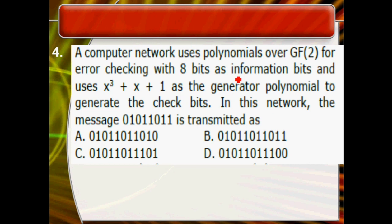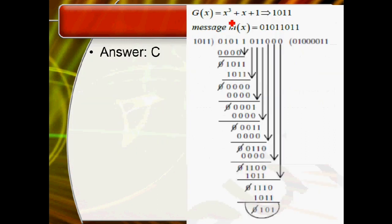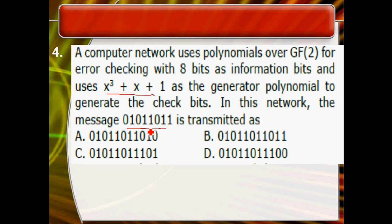The fourth question is related to CRC error control. We have original data that we are going to send to another node, and we must use a polynomial as a divisor for binary division. The polynomial is x cubed plus x plus 1, giving the divisor 1011. The original message data is 01011011. To perform CRC, we append three zeros to the data before dividing.